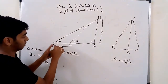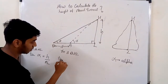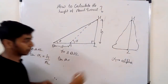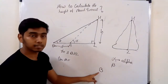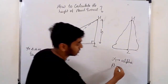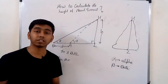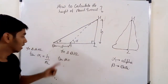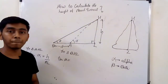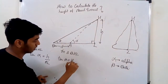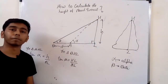Similarly in triangle BHL, tan beta equals HL upon BL, which is H upon BL. Alpha and beta are both already known to us. So from these: AL equals H upon tan alpha, and BL equals H upon tan beta.